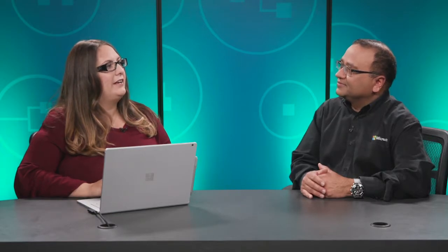Can you please share some examples of these use cases? Let's take a look at Jet.com. Jet.com chose Azure Cosmos DB to provide a reliable app experience for their customers on Black Friday, Cyber Monday, and other high-traffic periods. Azure Cosmos DB offers instant elastic scale to handle spikes in traffic and ensures extremely low-latency access to data and high availability worldwide. So my understanding is that it basically ensures that the app is up and running during high-demand and business-critical moments. Exactly.